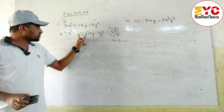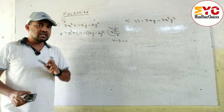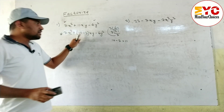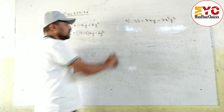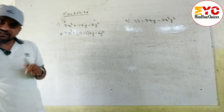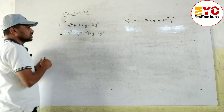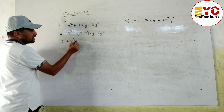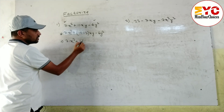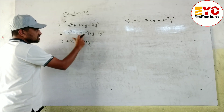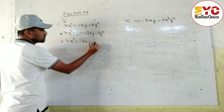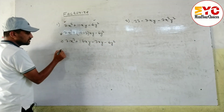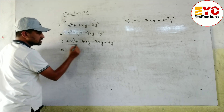I've seen that some students write 3 - 14 and get a negative answer, but here it is positive. Always write the bigger number first when there is subtraction. If it were addition, then no problem — you could write 3 + 14 also. Now open the bracket: 7x² + 14xy - 3xy - 6y².